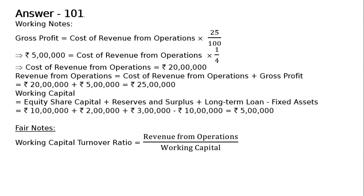Working capital turnover ratio equals revenue from operations divided by working capital, that is Rs. 25 lakhs divided by Rs. 5 lakhs, which equals 5 times. This is the final answer. Thank you.